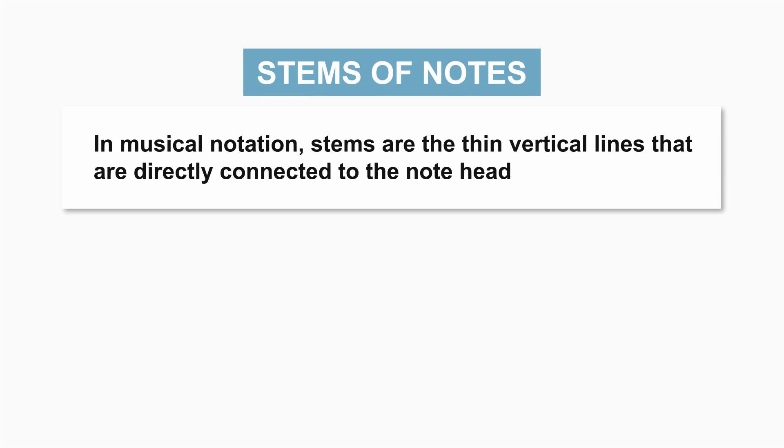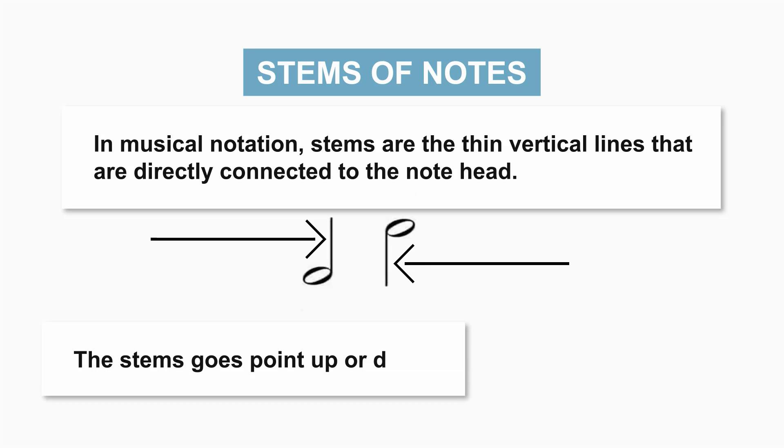In musical notation, stems are the thin vertical lines that are directly connected to the note head. The stems go point up or down.